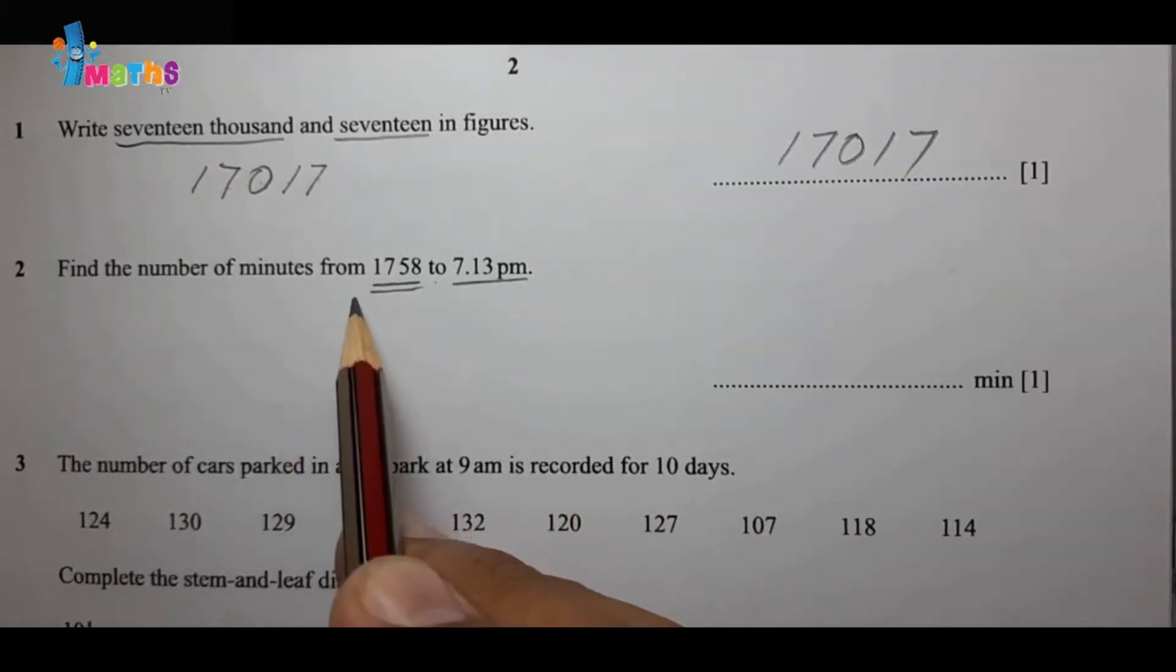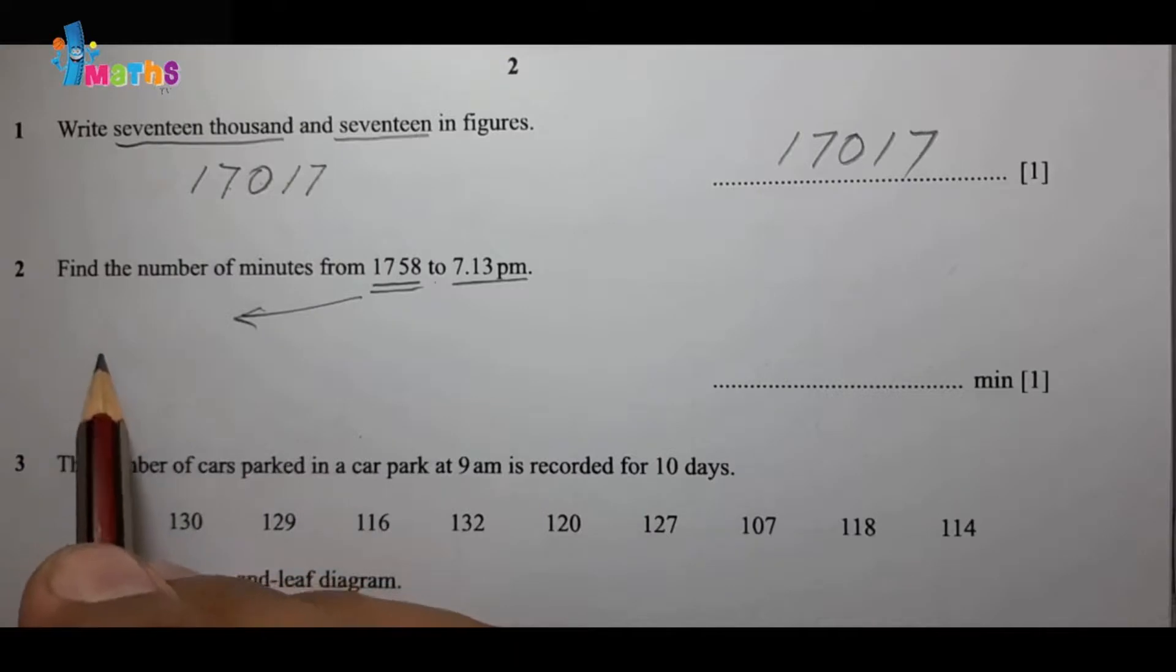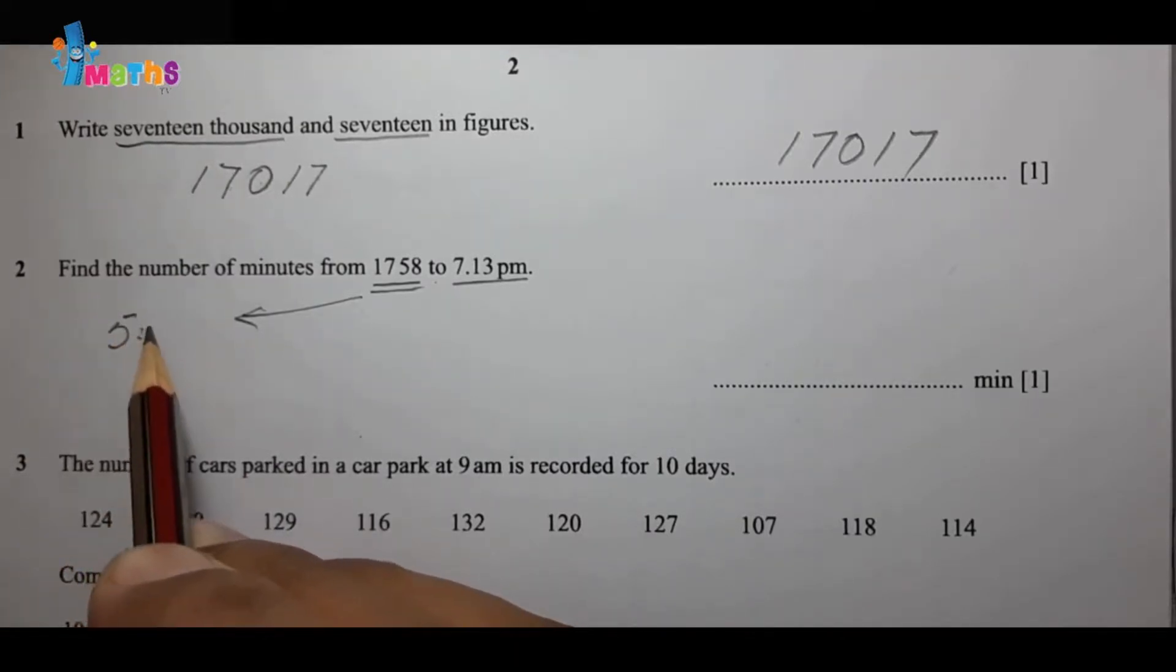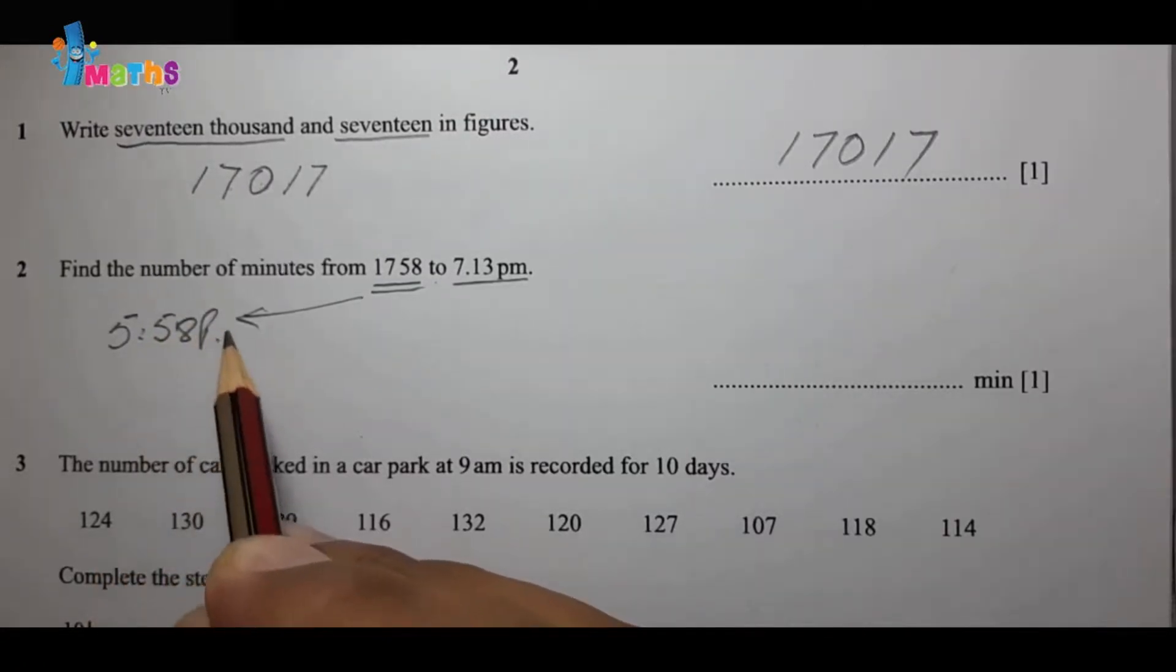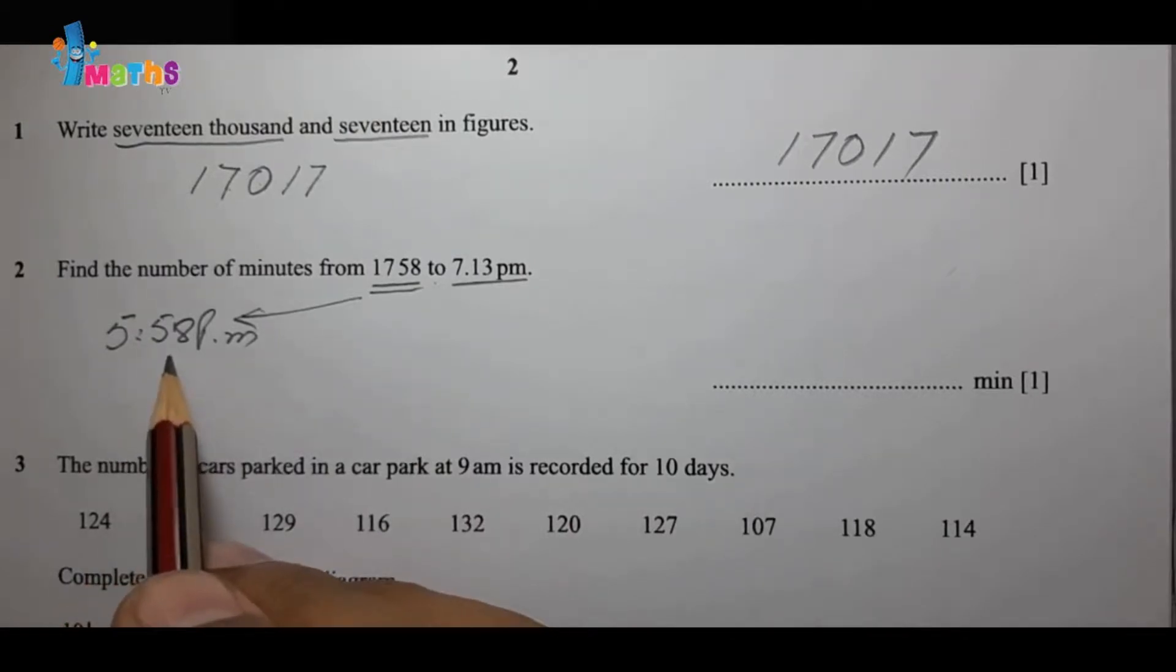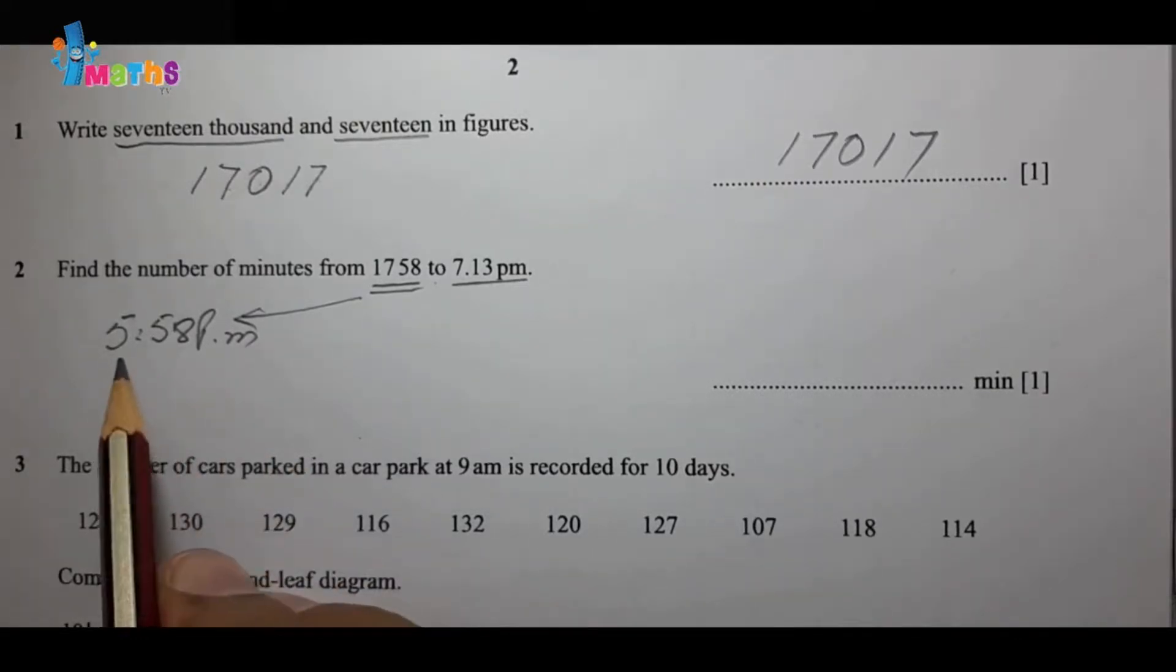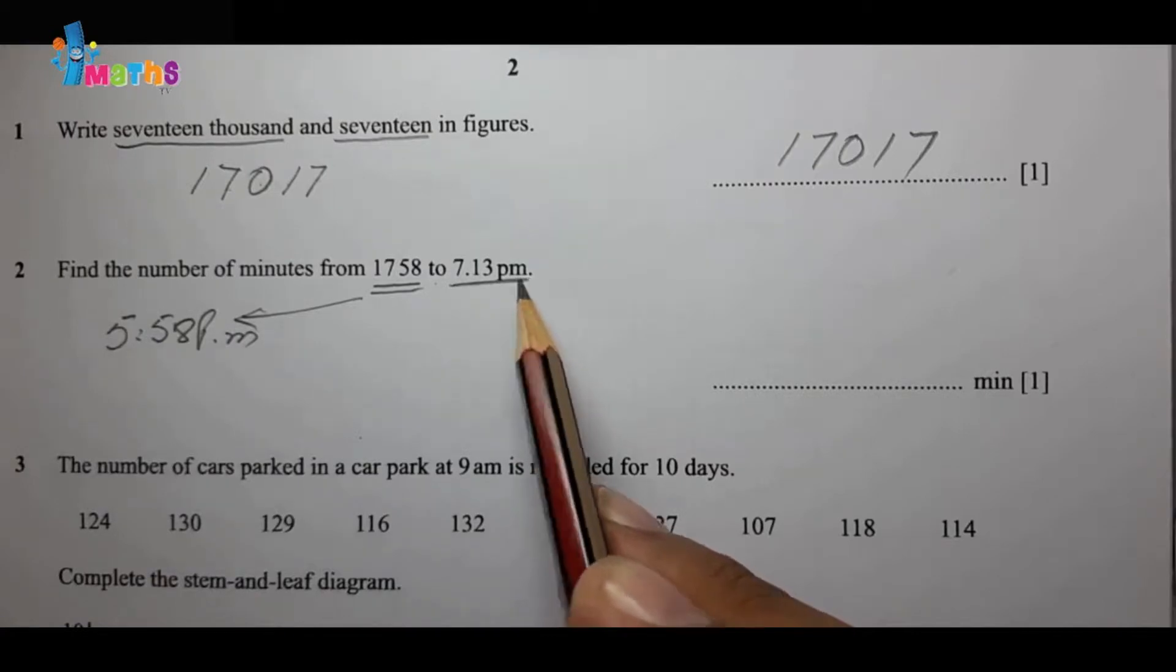The format of 1758 we will change, and 1758 we can write as 5:58 PM. So after converting this, now we have to find the difference between 5:58 and 7:13.